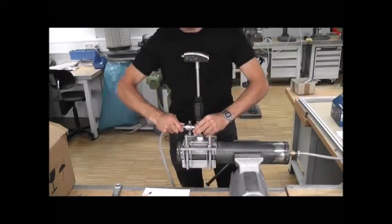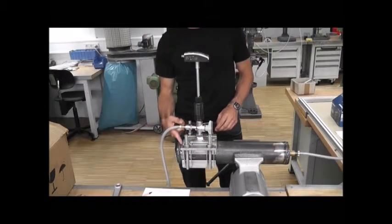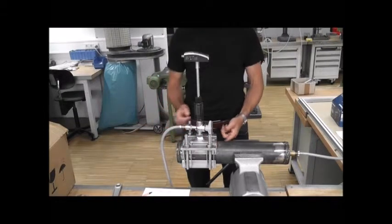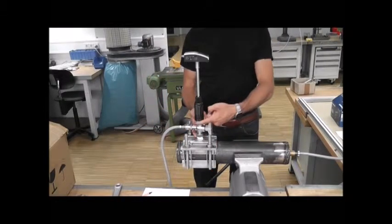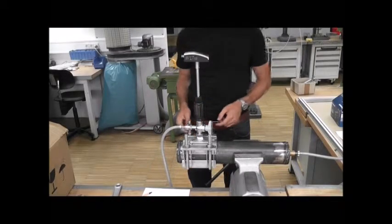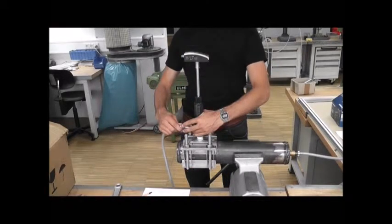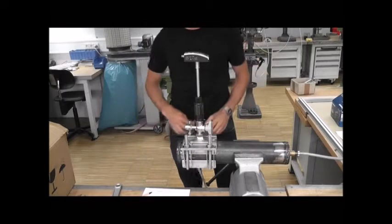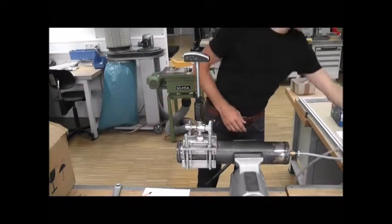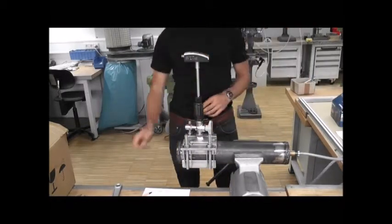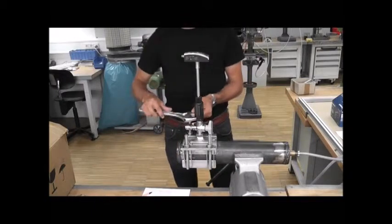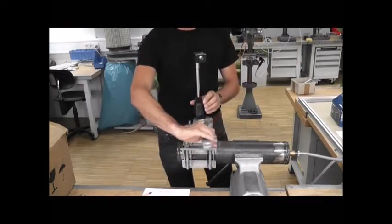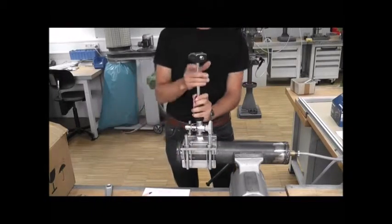Before you uninstall the transmitter, you should also prove if the tapping clamp fits leak proof on the pipe. Therefore, mount the compressed air hose to the ball valve. If you hear no sound of the compressed air, the tapping clamp fits leak proof on the pipe. The last point is to uninstall the transmitter.